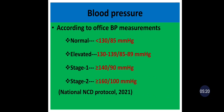Patients with systolic and diastolic blood pressures falling into different categories should be grouped under the higher blood pressure category. This classification is taken from the 2021 Ethiopian National Non-Communicable Disease Management Protocol. If you use the 2017 High Blood Pressure Clinical Practice Guideline from the American Heart Association and American College of Cardiology, the cutoff values are different.